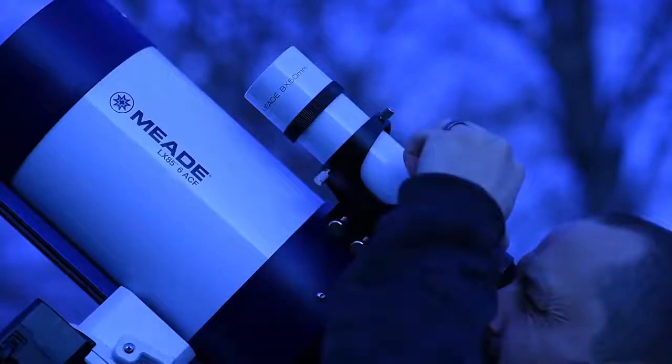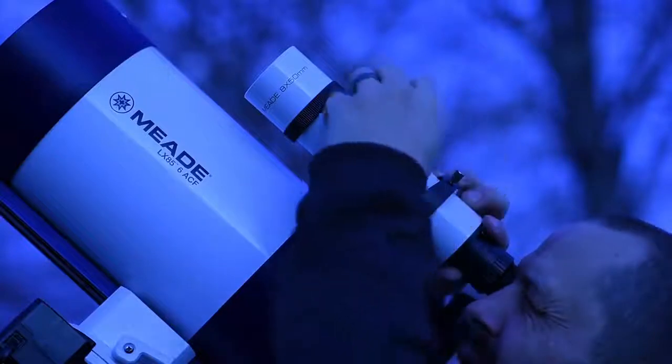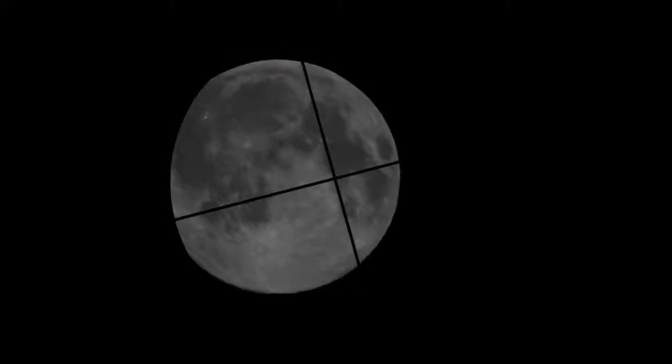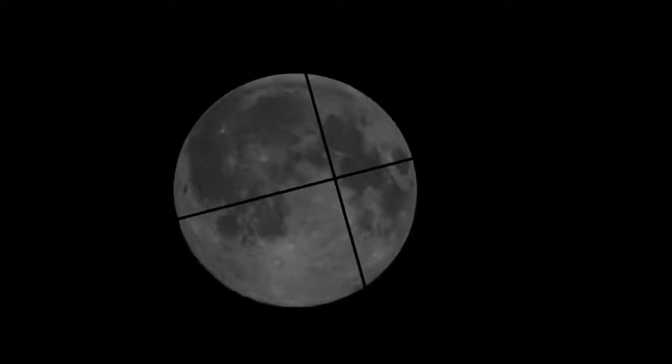When adjusting the viewfinder, adjust two screws at once. One to tighten and one to loosen. Only adjusting one of the front screws will not make an adjustment. Two screws need to be moved at once.